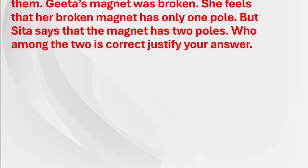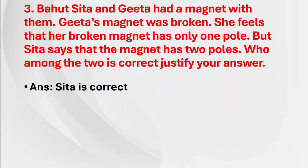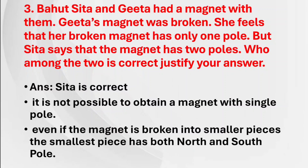Third question: Sita and Gita had a magnet. Gita's magnet was broken. She feels that her broken magnet has only one pole, but Sita says the magnet has 2 poles. Who among the two is correct? Answer: Sita is correct. It is not possible to obtain a magnet with a single pole. Even if a magnet is broken into smaller pieces, the smallest piece has both a north and south pole.